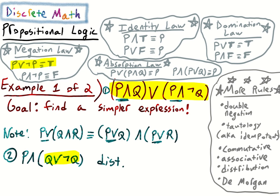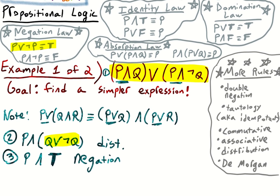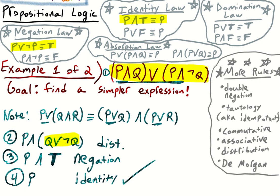So for line three, we can say p and something that's always true, by the negation law. And now we have p and something necessarily true — we have the identity law. So for line four, we can just get p by identity. And there we have simplified this expression to something much simpler.